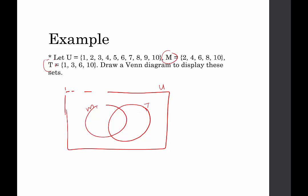Now we're going to fill in what we know. Generally, when we fill in Venn diagrams, we want to start with the overlap — anything that is represented in both M and T. So what do M and T have in common? They both have a six and they both have a ten. So within the overlap, we're going to put 6 and 10. Six and ten are contained in set M and also within set T, which is why we put them in the overlap, because we only write every value once.